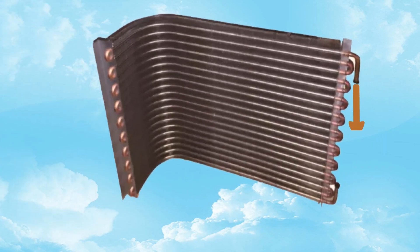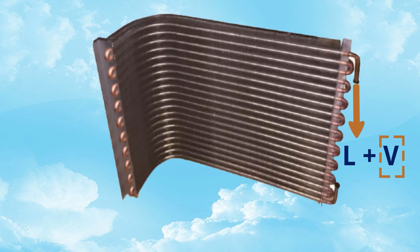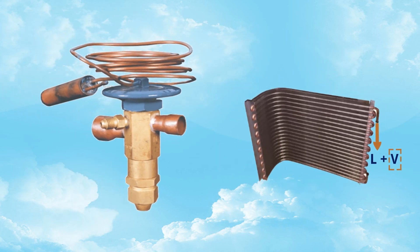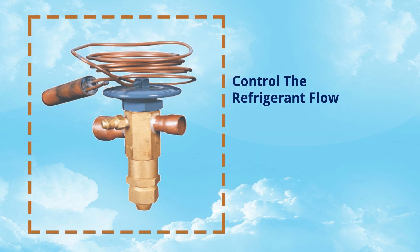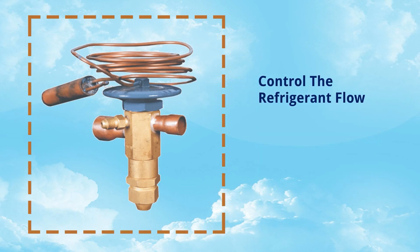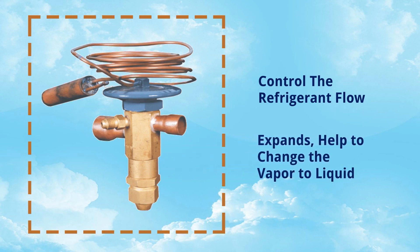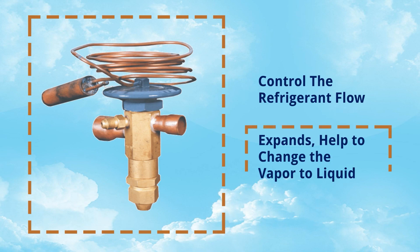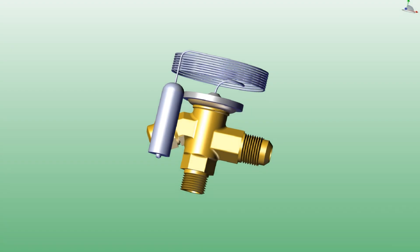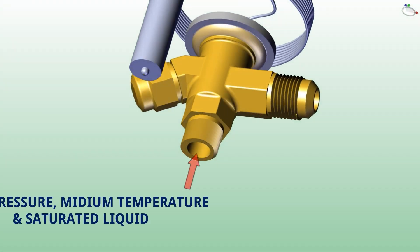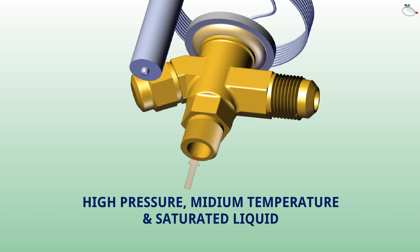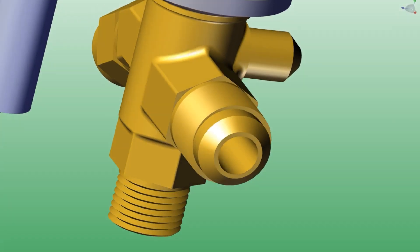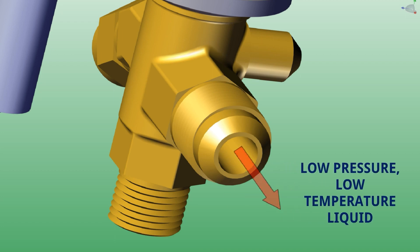The fourth part of the refrigeration cycle is the expansion valve. High-pressure refrigerant liquid comes out from the condenser coil with some vapor still present, and we need to change this vapor into liquid — here comes the expansion valve. It mainly helps to control the refrigerant flow, and as the name suggests, expansion happens and helps to change the vapor into liquid. High-pressure, medium-temperature saturated liquid enters at the inlet, and low-pressure, low-temperature liquid exits at the outlet.